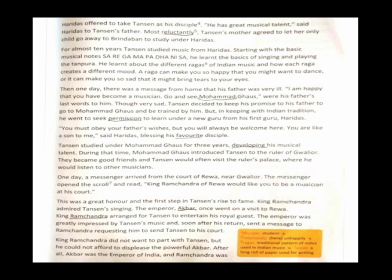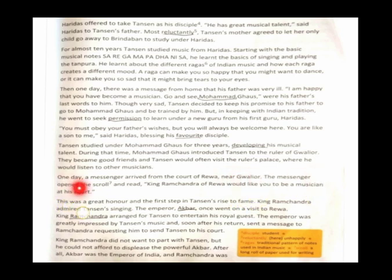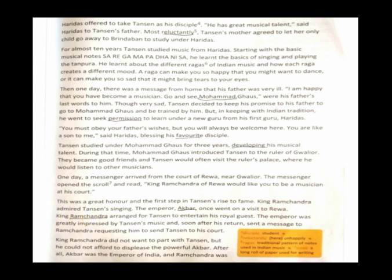One day, a messenger arrived from the court of Rewa, near Gwalior. The messenger opened the scroll — a long roll of paper used for writing in olden days — and read: 'King Ramachandra of Rewa would like you to be a musician at his court.' This was a great honor and the first step in Tansen's rise to fame.